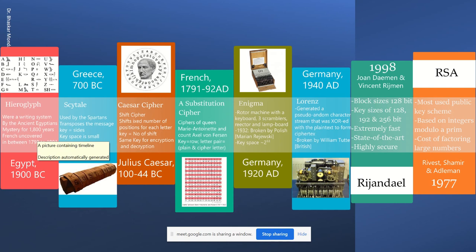When transmitting information from one place to another using a human carrier, that carrier would know the information. But if written on a piece of paper, the carrier would deliver it without knowing the content, keeping it secret from that third party. This is considered one big cause for the introduction of written scripts. The cryptography community considers hieroglyphs one of the oldest ciphers.